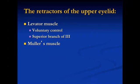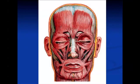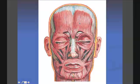The second one is Mueller's muscle. It's innervated by the sympathetic nervous system, and it gives you about two millimeters of lift. The third one is the frontalis muscle, which is innervated by the facial nerve, and it also helps with elevation. As you see on this diagram, the frontalis muscle can play an important role when someone is looking up.